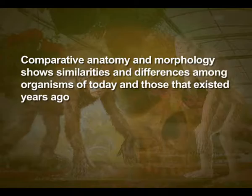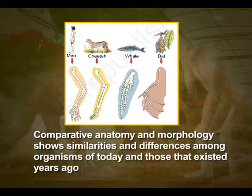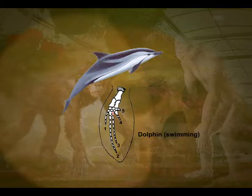Comparative anatomy and morphology show similarities and differences among organisms of today and those that existed years ago. Such similarities can be interpreted to understand whether common ancestors were shared or not. For example, whales, bats, cheetah and humans — all mammals — share similarities in the pattern of bones of forelimbs. Though these forelimbs perform different functions in these animals, they have similar anatomical structure.